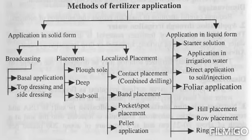Drill placement is where drilling seed and fertilizer together at sowing. Subsoil placement is where placement of fertilizer in subsoil with the help of heavy power machinery. De-placement is when you place fertilizer to avoid nitrogen loss underground.